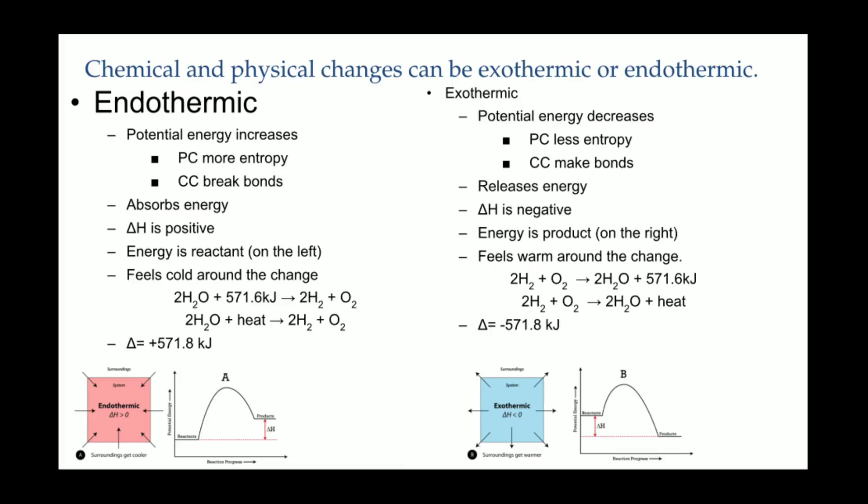Exothermic reactions always release heat. During phase changes, this release allows the particles to move closer. During a chemical change, the release of energy allows for the making of bonds. This is why most substances are found bonded together, because together, bonded, they can have lower energy. Exothermic reactions have the heat term on the product side, or the delta H is negative.